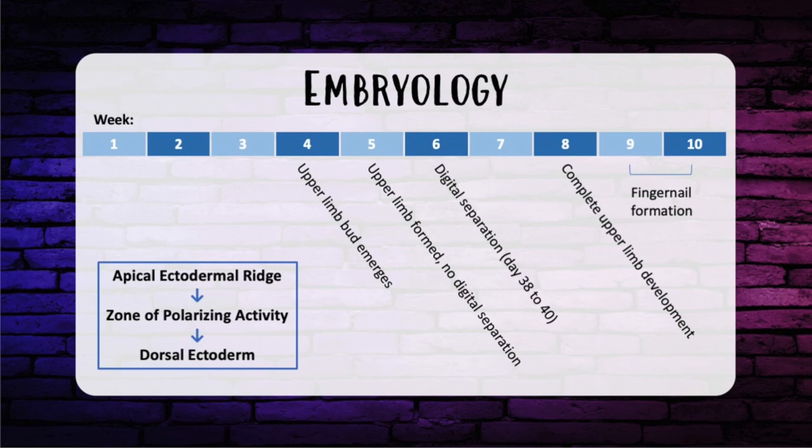Week six, the digits start to separate. By week eight, there's complete upper limb development, and weeks nine to ten is when the fingernails start to form. The high yield area for the exam is differentiating between week five — aka high five, no digital separation — and week six, where the digits start to separate.